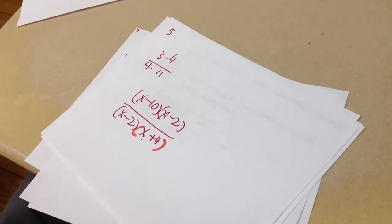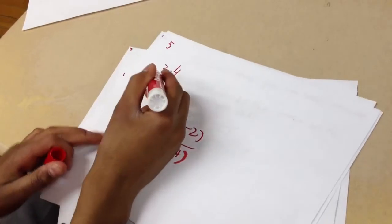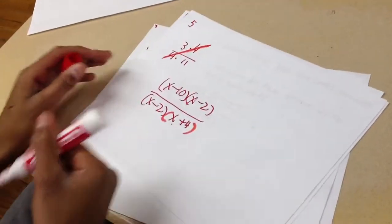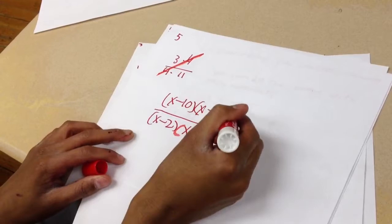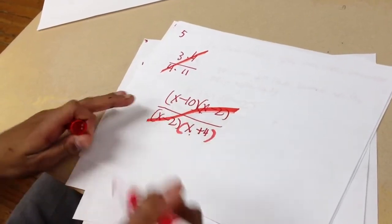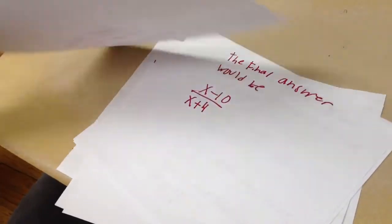So just like with fractions, if you have one on the top and one on the bottom, you can cross-cancel. You can do the same thing here. So you can cross-cancel with the x minus 2s, and that's what that looks like.